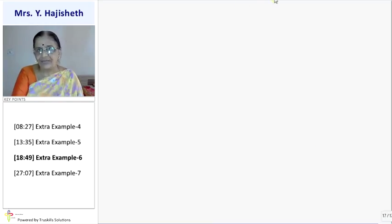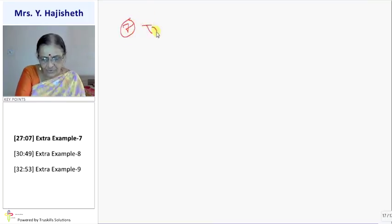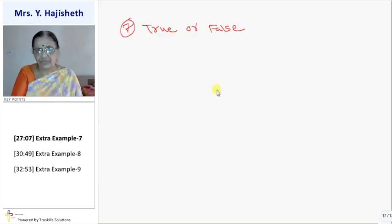Now sum number 7, I am giving you, it is of the true false type question. You have to say the following statements are true or false. False with explanation, why it is false.